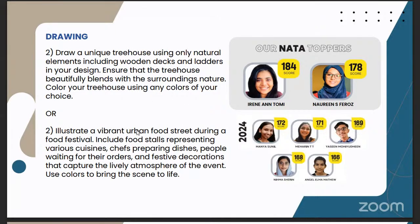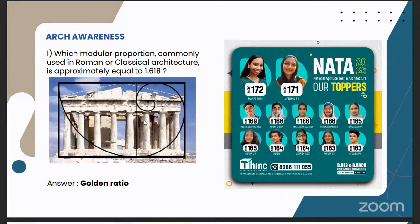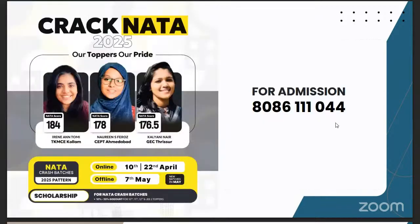Looking into a few architecture awareness questions collected from our students: which modular proportion commonly used in Roman or classical architecture is approximately equal to 1.618? We all know that is the golden ratio. The golden ratio is the main proportion used in ancient buildings — in Greek architecture and other ancient architectural styles and civilizations. 1.618 is the golden ratio. That was an easy question.